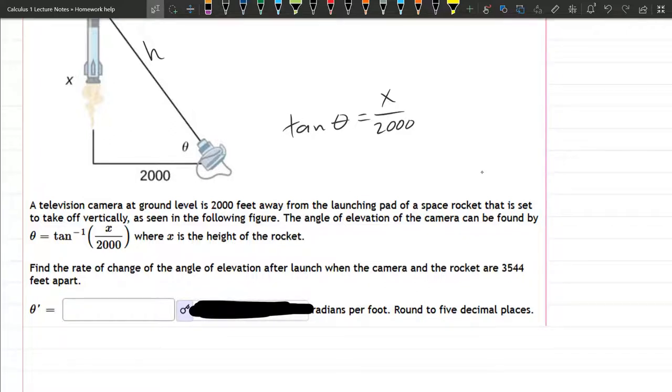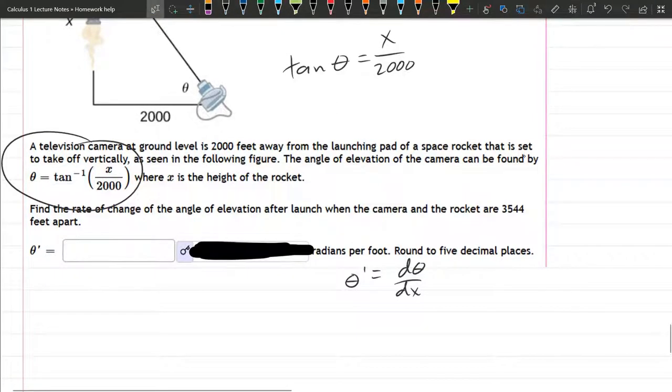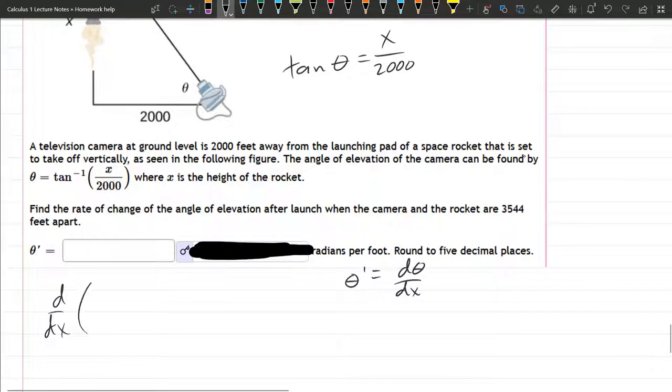Every question in this point in calculus involves taking a derivative. Theta prime, the other variable besides theta is x. So theta prime, you can write as d theta over dx because x is the other variable. So we need to differentiate the equation with respect to x. So we're going to take d dx of tan inverse - oops, I already messed up - theta equals tan inverse of x over 2,000.